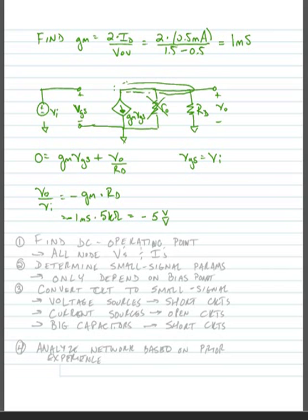That was kind of tedious. What we're going to notice is that every time we see a common source amplifier, the solution is going to be very similar. So what we're going to do is eliminate those steps and just recognize the gain directly. From now on, we always have to find the DC operating point — there's no way around that, because the DC operating point sets our small signal parameters. We need to know all node voltages, DC voltages, and DC currents, to verify saturation assumptions.